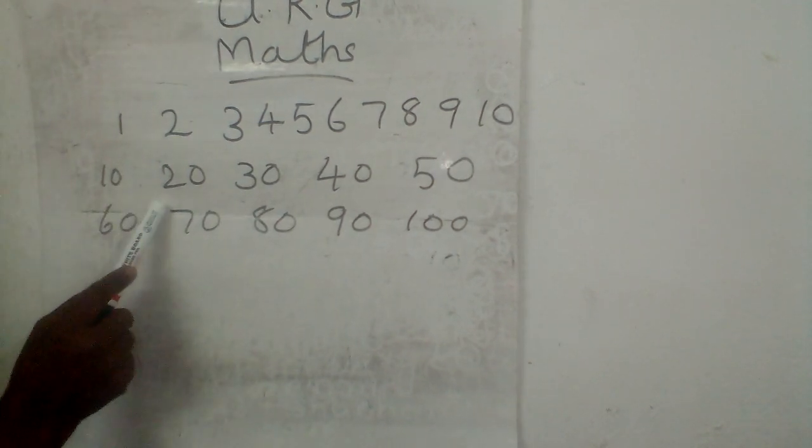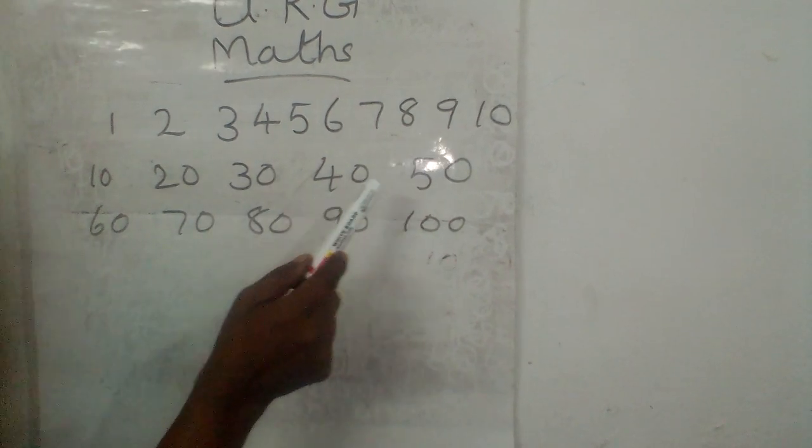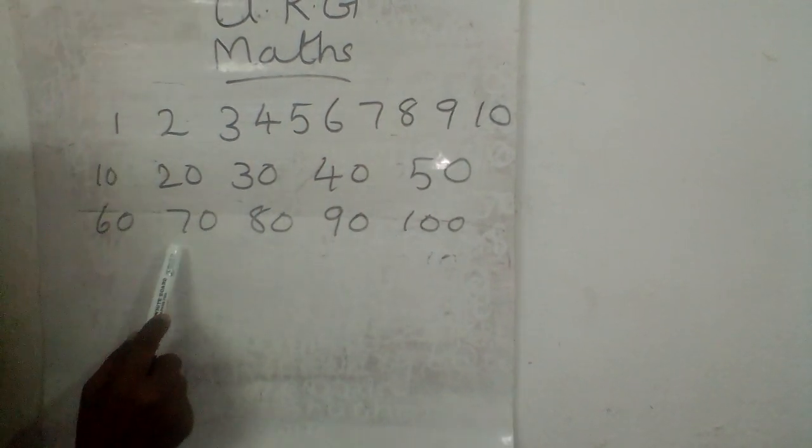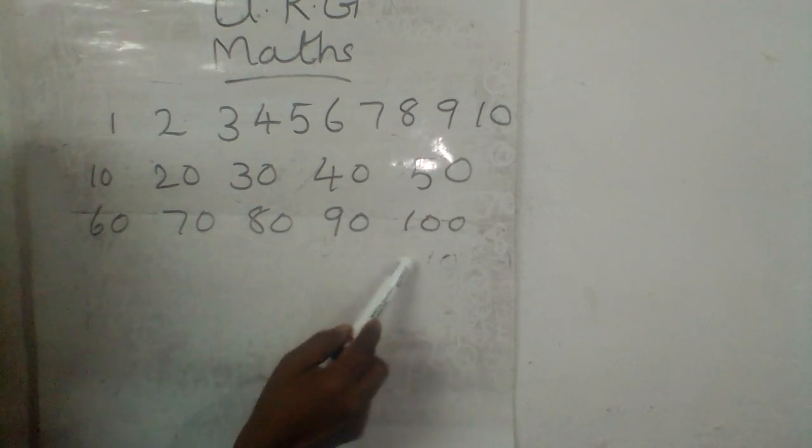1, 0, 10. 2, 0, 20. 3, 0, 30. 4, 0, 40. 5, 0, 50. 60, 60, 70, 70, 80, 90, 90, 100.